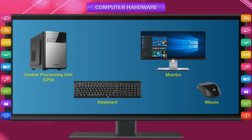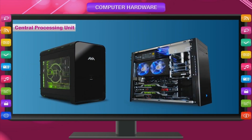The most important parts of a computer system are as follows: Central Processing Unit or CPU, keyboard, monitor, and mouse.